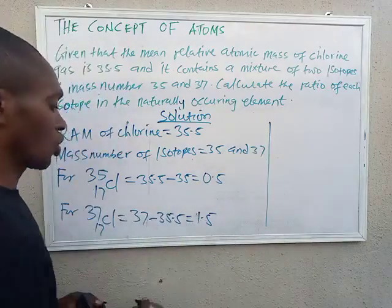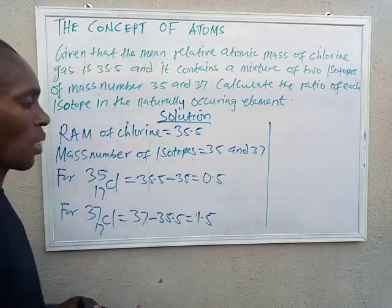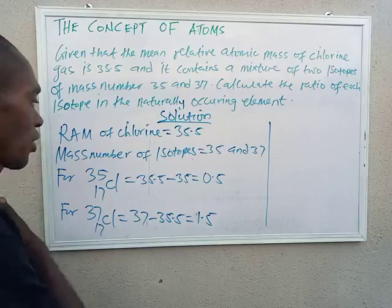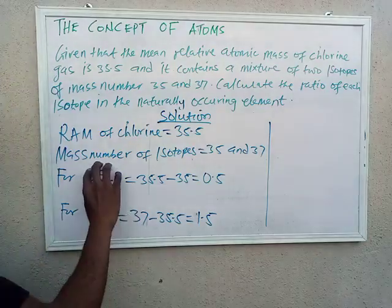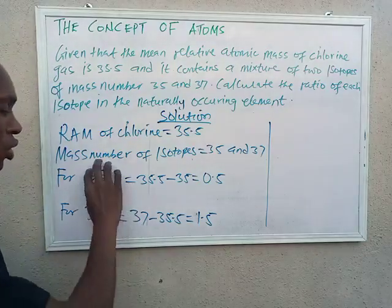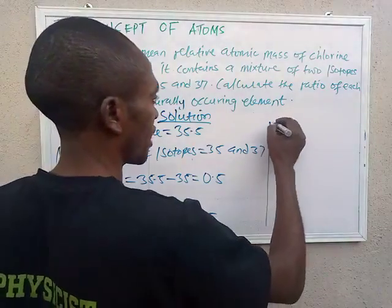The next thing is to represent this as a ratio. We're going to write the highest ratio to the lowest ratio.